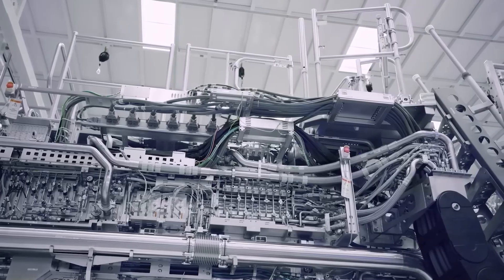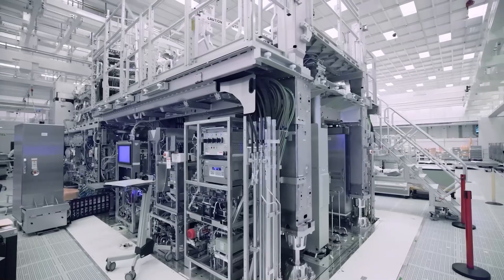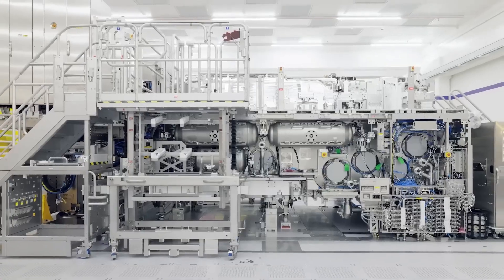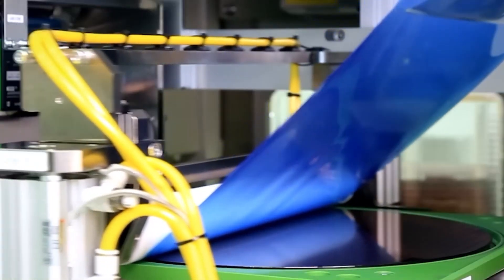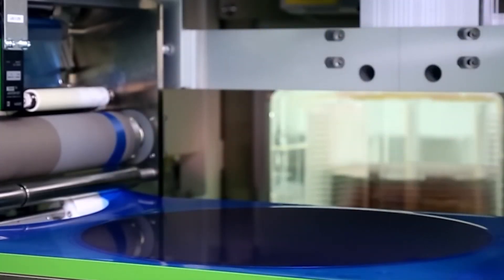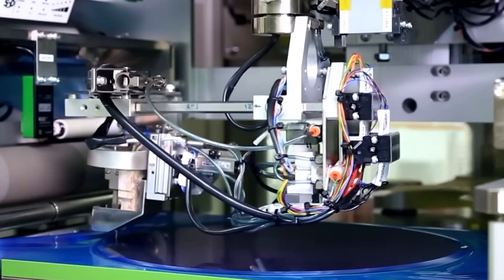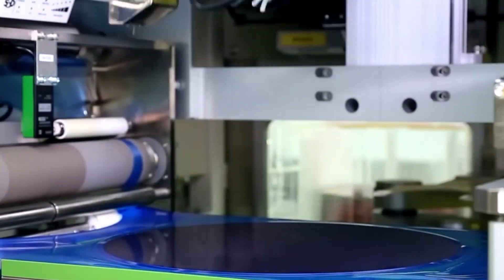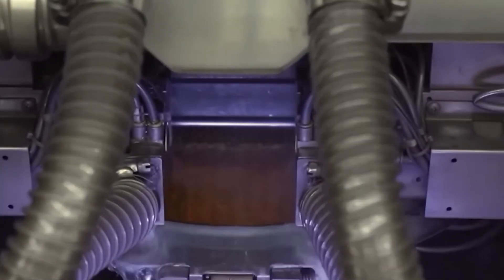After the wafers complete their lithographic transformation, it's time to slice and dice, literally. Diamond-tipped saws, engineered for unparalleled precision, slice the wafer into individual chips. Each tiny chip is a powerhouse, ready to be prepared for deployment across the tech ecosystem.